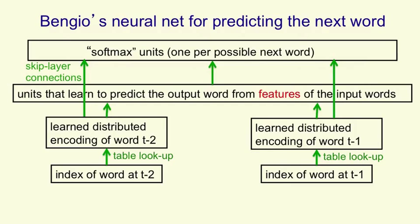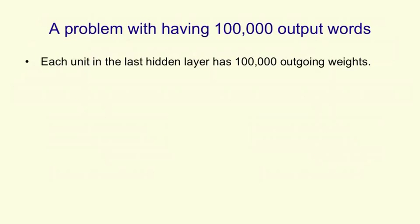Since then, these language models that use feature vectors for words have been improved considerably. And they're now considerably better than trigram models. One problem with having a big softmax output layer is that you might have to deal with 100,000 different output words. Because typically in these language models, the plural of a word is a different word from the singular. And the various different tenses of a verb are different words from other tenses.